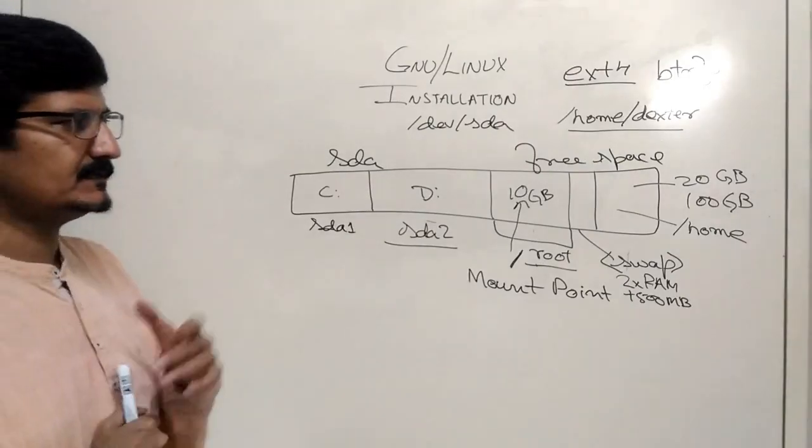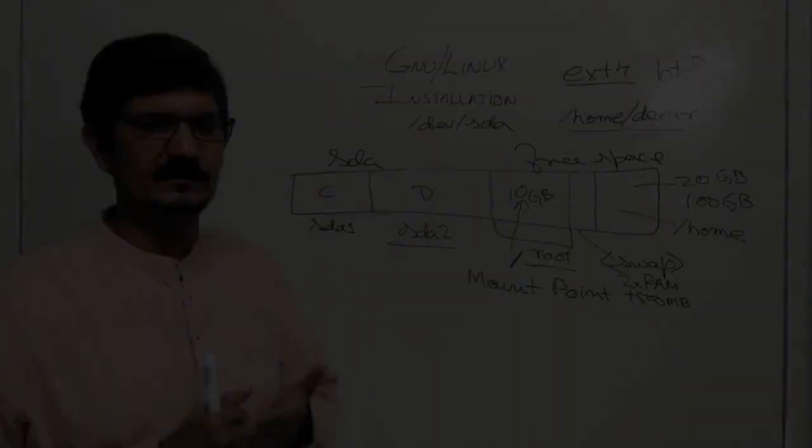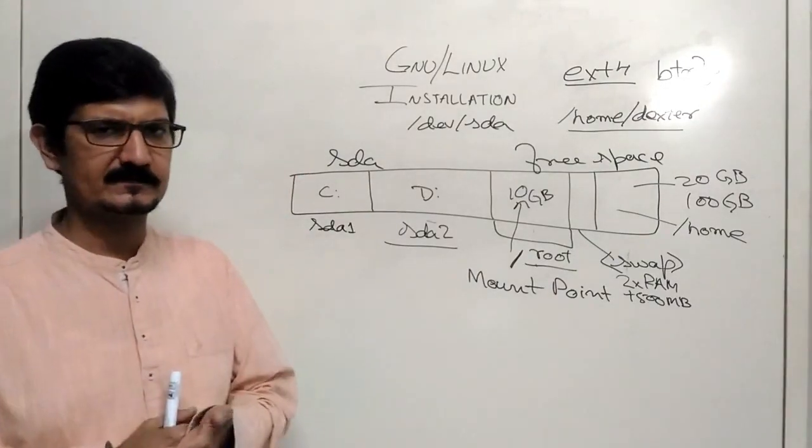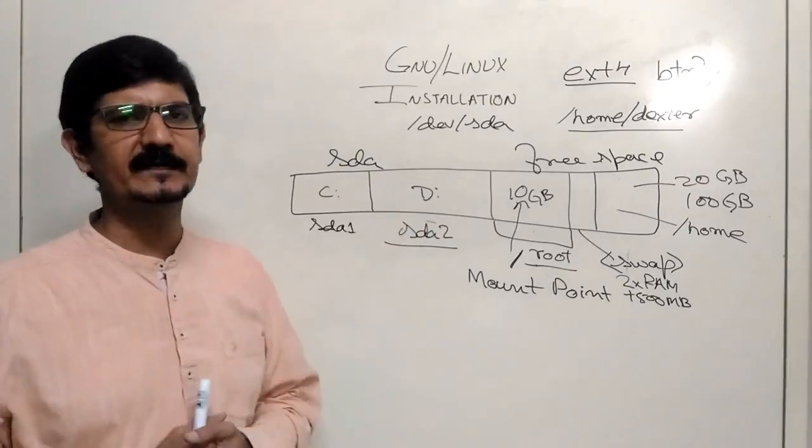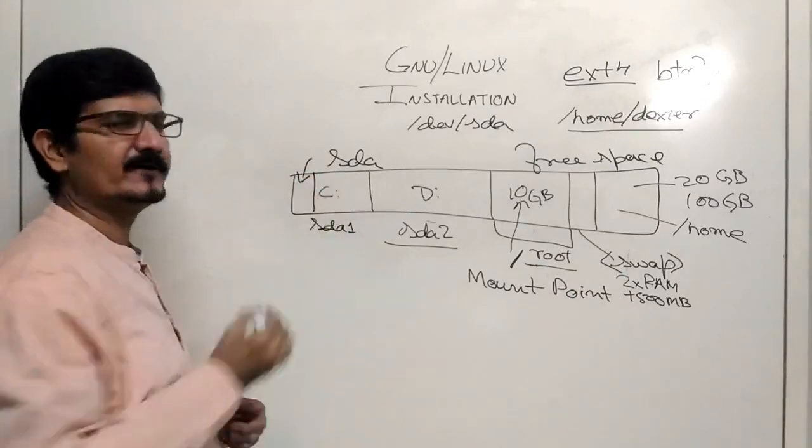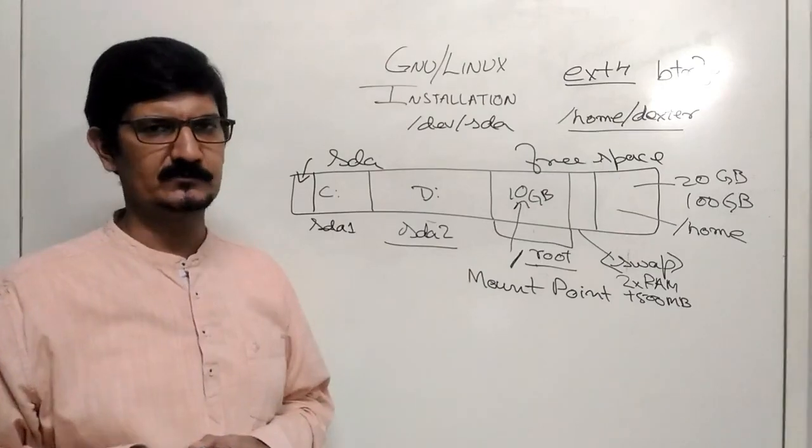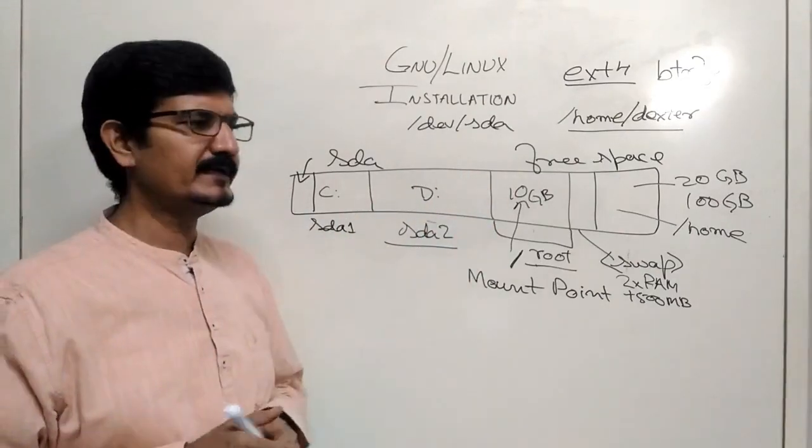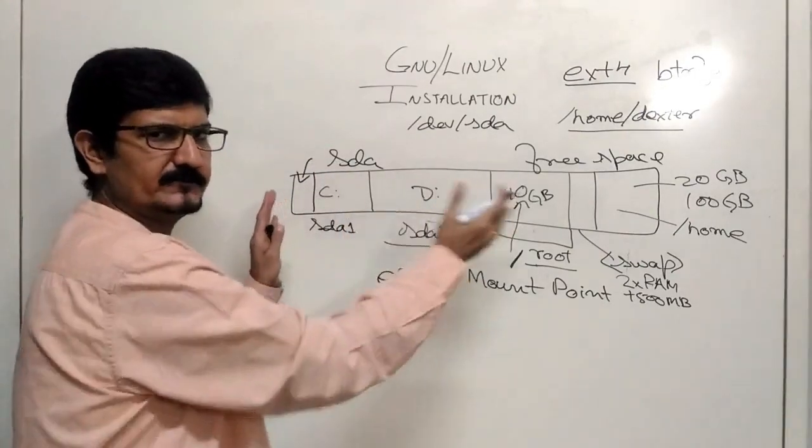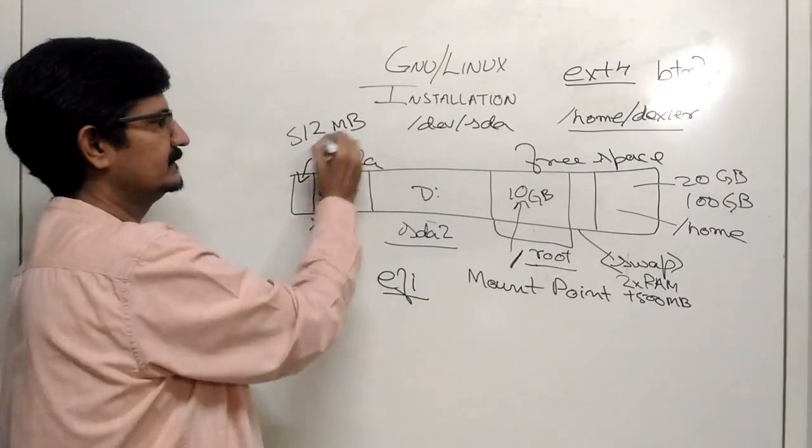Now one thing I missed is, if you are having a newer system which has a UEFI BIOS, you will need to create a EFI partition. Now in most of the cases, if Windows is installed, there would be an EFI partition already and it will get mounted automatically and the system will use it. If you don't have anything, do create an EFI partition as the first partition when you are installing, this should be around 512 MB.